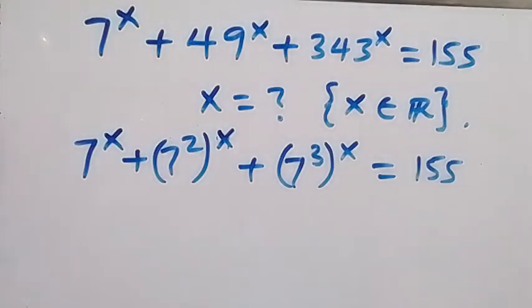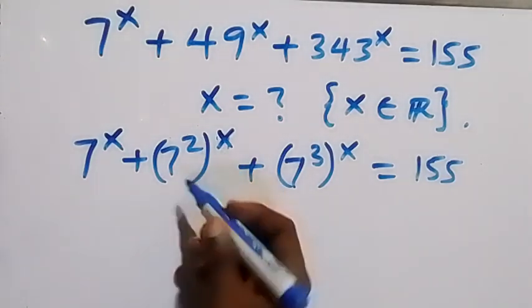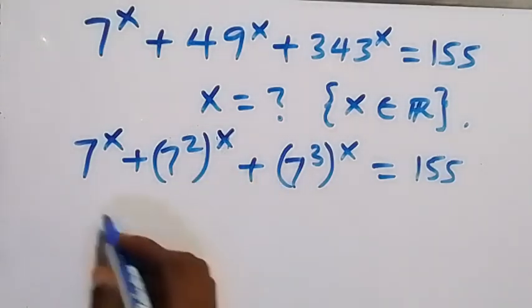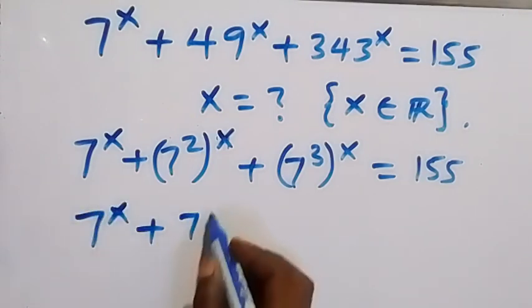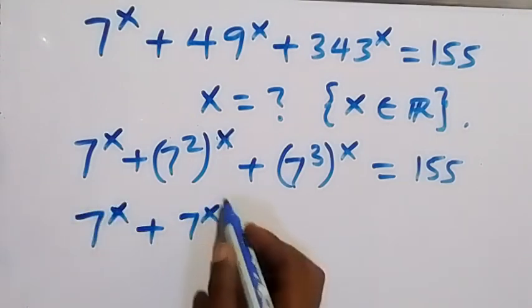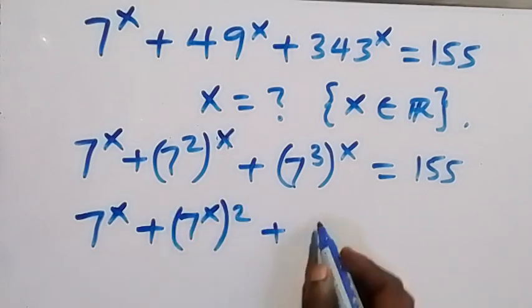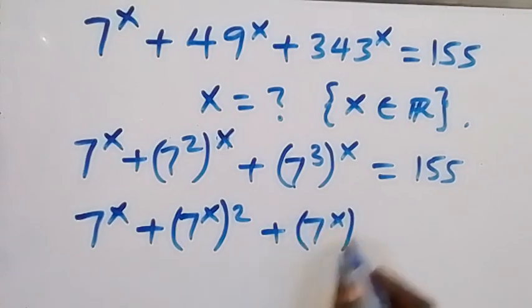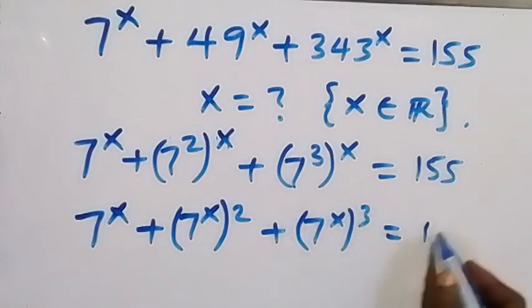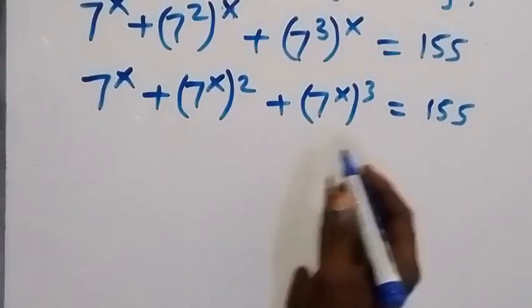From the law of indices, this power multiplies. It means we can interchange it, and this is 7 raised to the power x, plus 7 raised to the power x raised to the power 2, plus also 7 raised to the power x raised to the power 3, equals to 155.